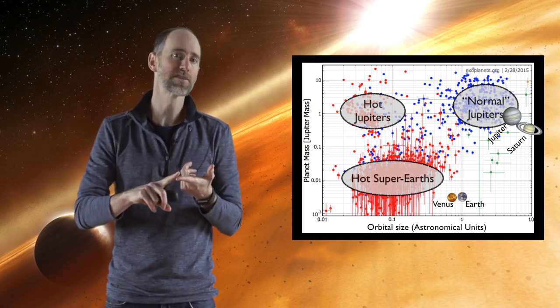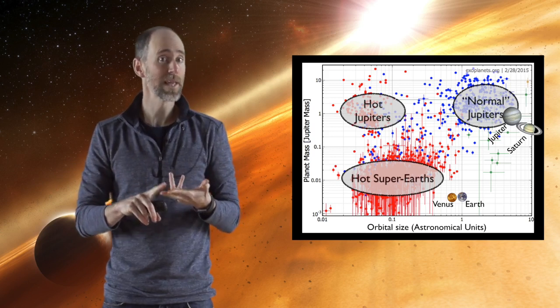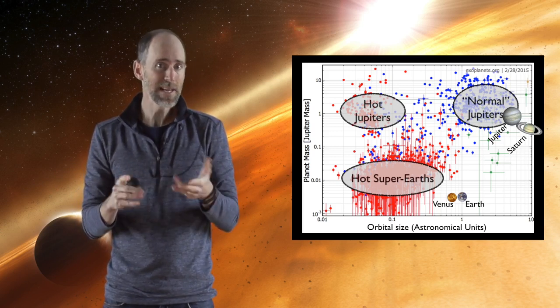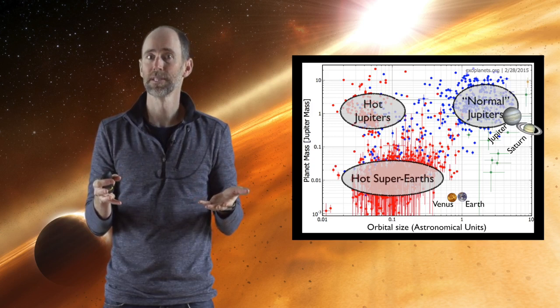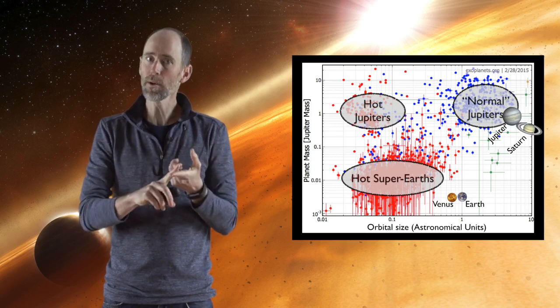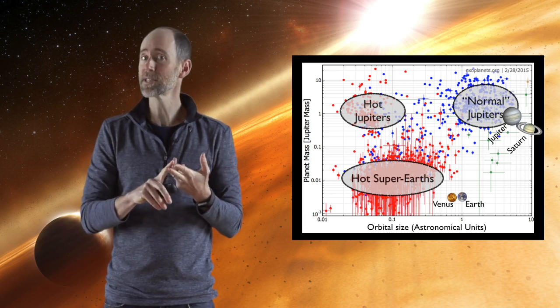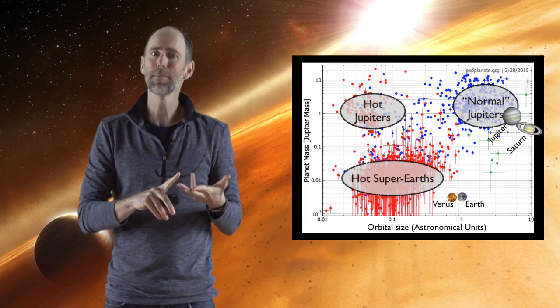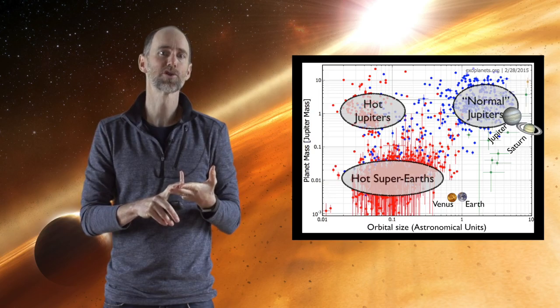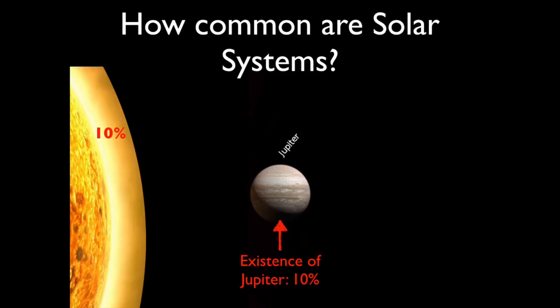We can't find Saturns yet either, but we can now start to find Jupiters. From these different clumps, about 1% of stars like the Sun have a hot Jupiter, about 10% have a normal Jupiter, and about 50% have a hot super-Earth. What does that mean? The probability of us having a Jupiter is about 1 in 10, about a 10% chance.